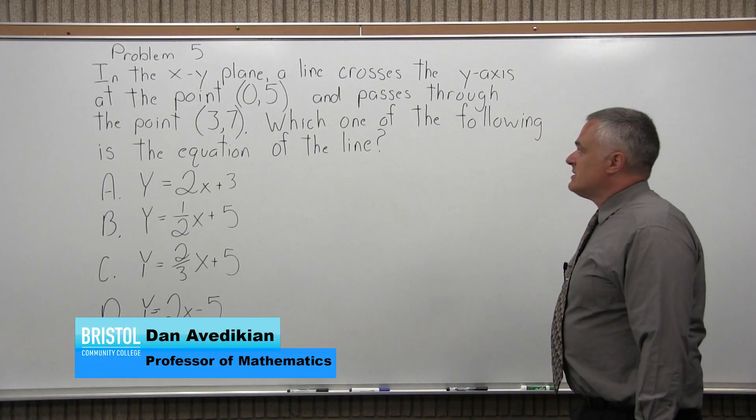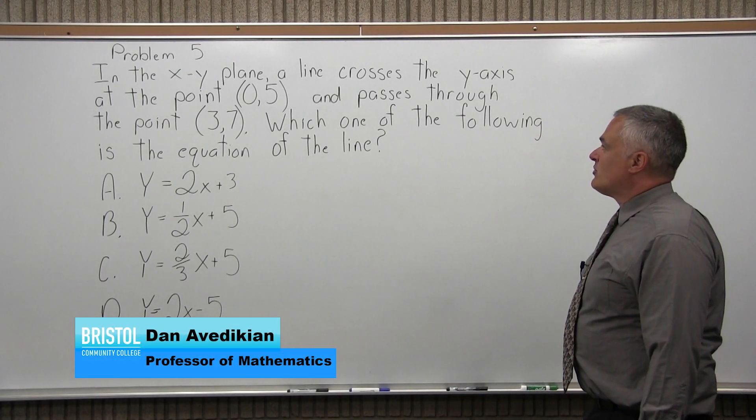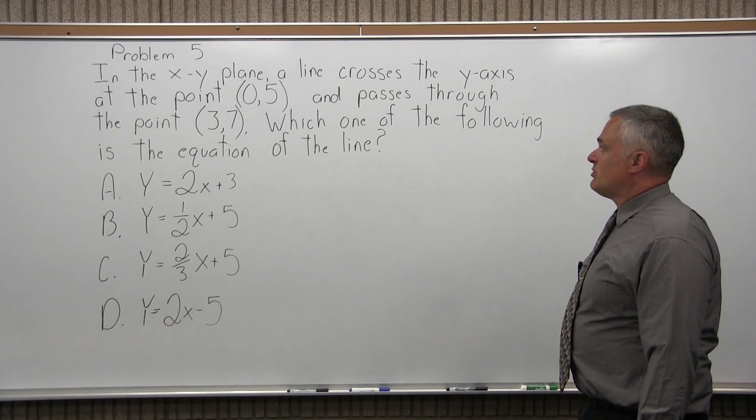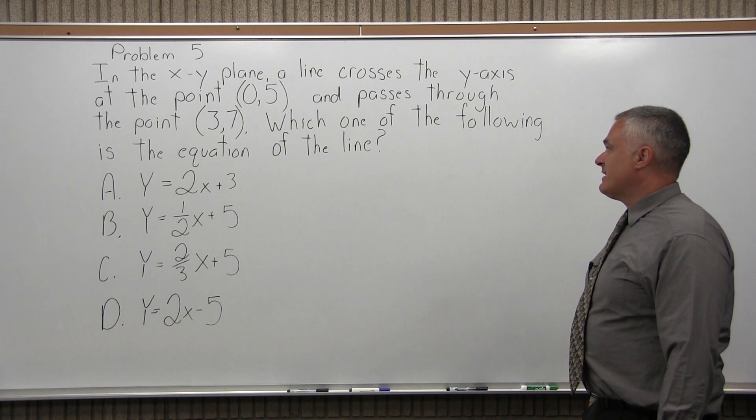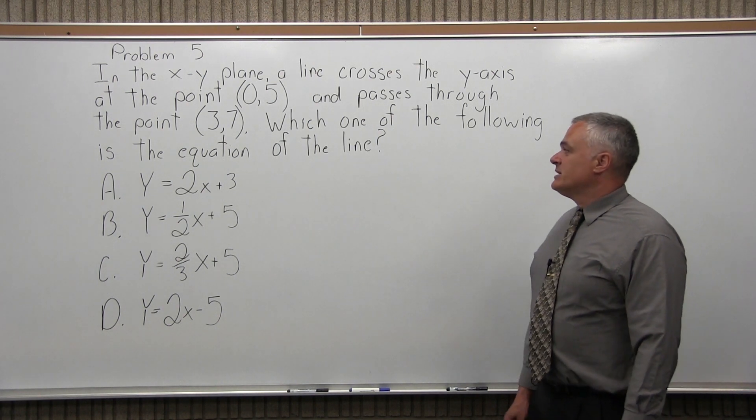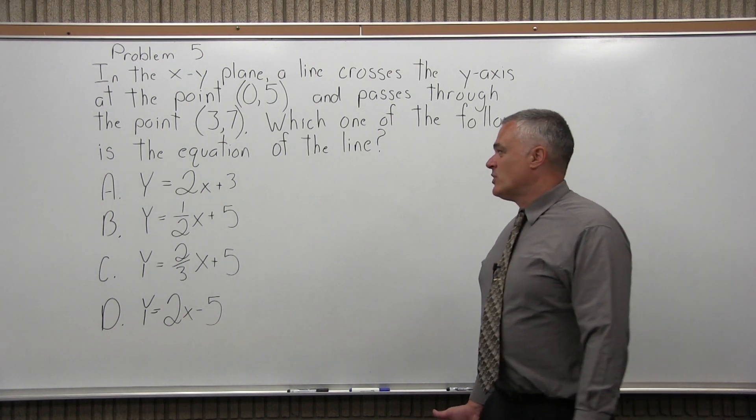This is problem 5. It says in the xy-plane a line crosses the y-axis at the point (0,5) and passes through the point (3,7). Which one of the following is the equation of the line? We have four choices.